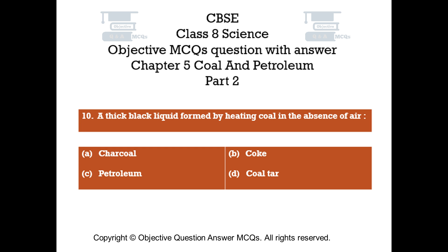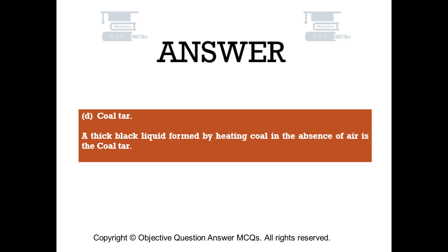Question number 10: A thick black liquid formed by heating coal in the absence of air — Option A: Charcoal. Option B: Coke. Option C: Petroleum. Option D: Coal tar. The right answer is Option D: Coal tar. A thick black liquid formed by heating coal in the absence of air is coal tar.